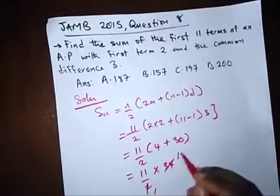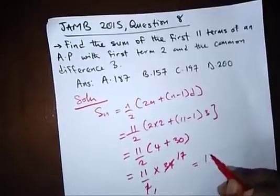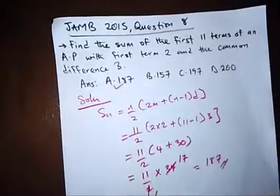Here we have 1 and here we have 17. And 11 times 17 is 187. And our correct option here is option A.